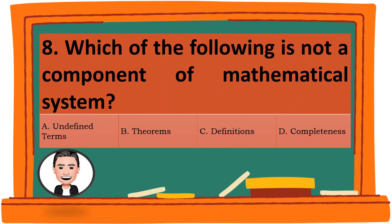Question 8. Which of the following is not a component of a mathematical system? A. Undefined terms. B. Theorem. C. Definitions. D. Completeness.